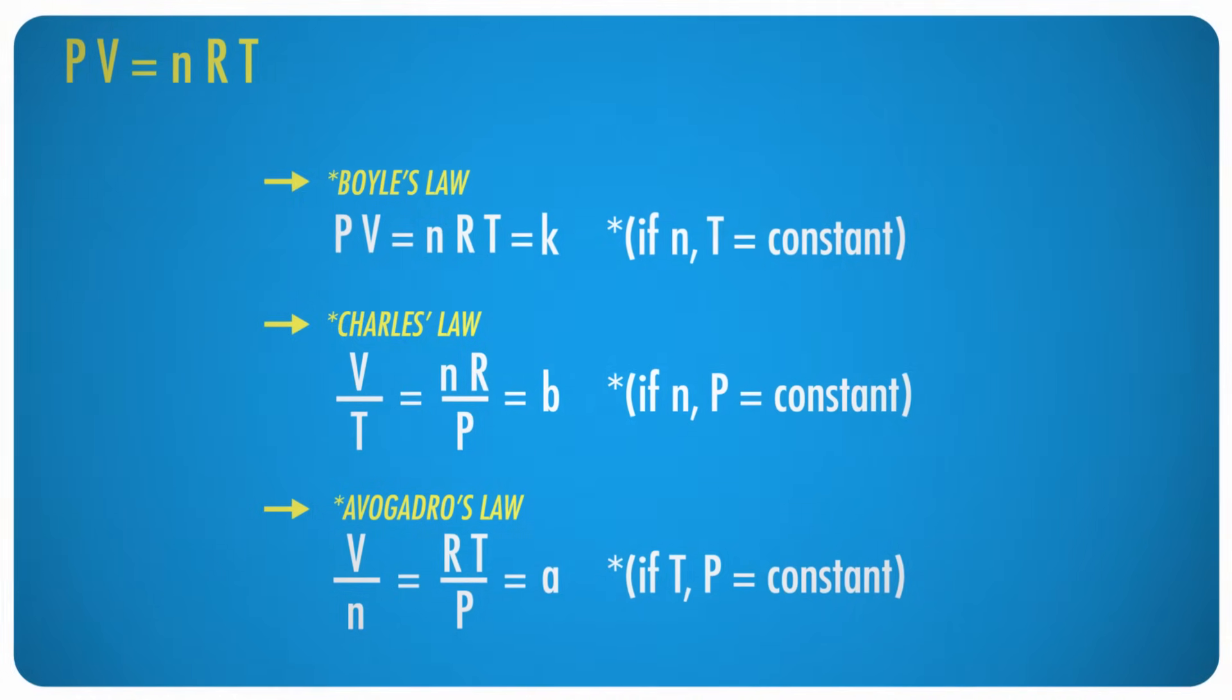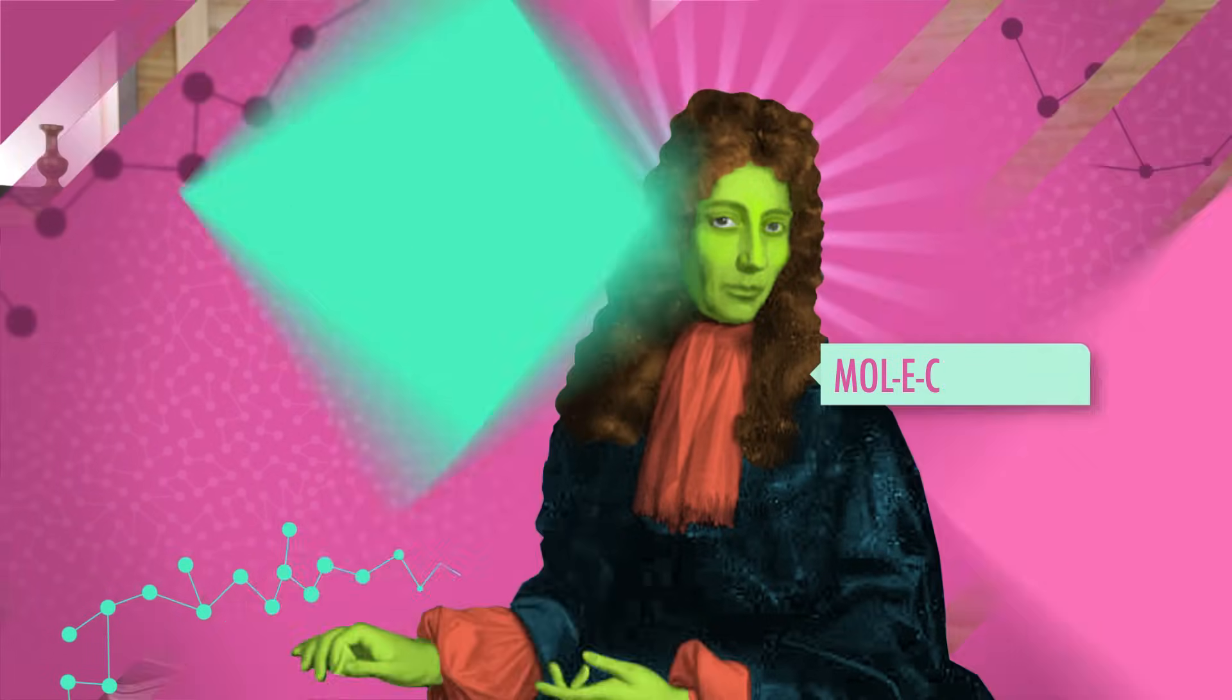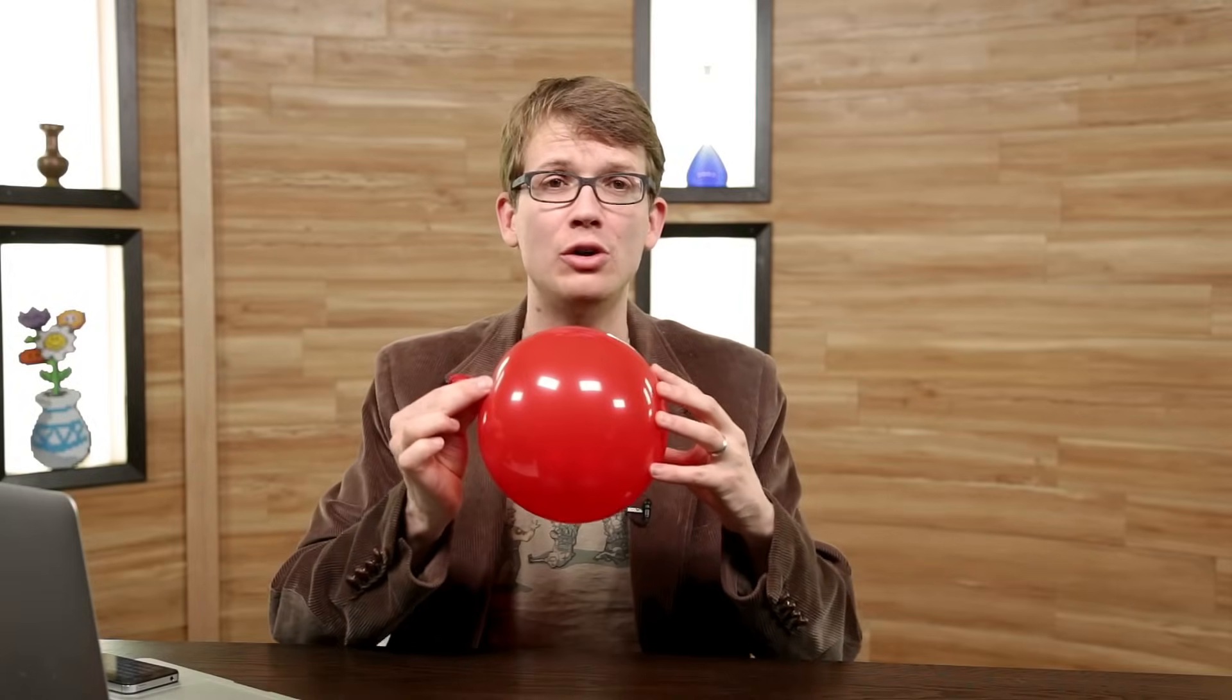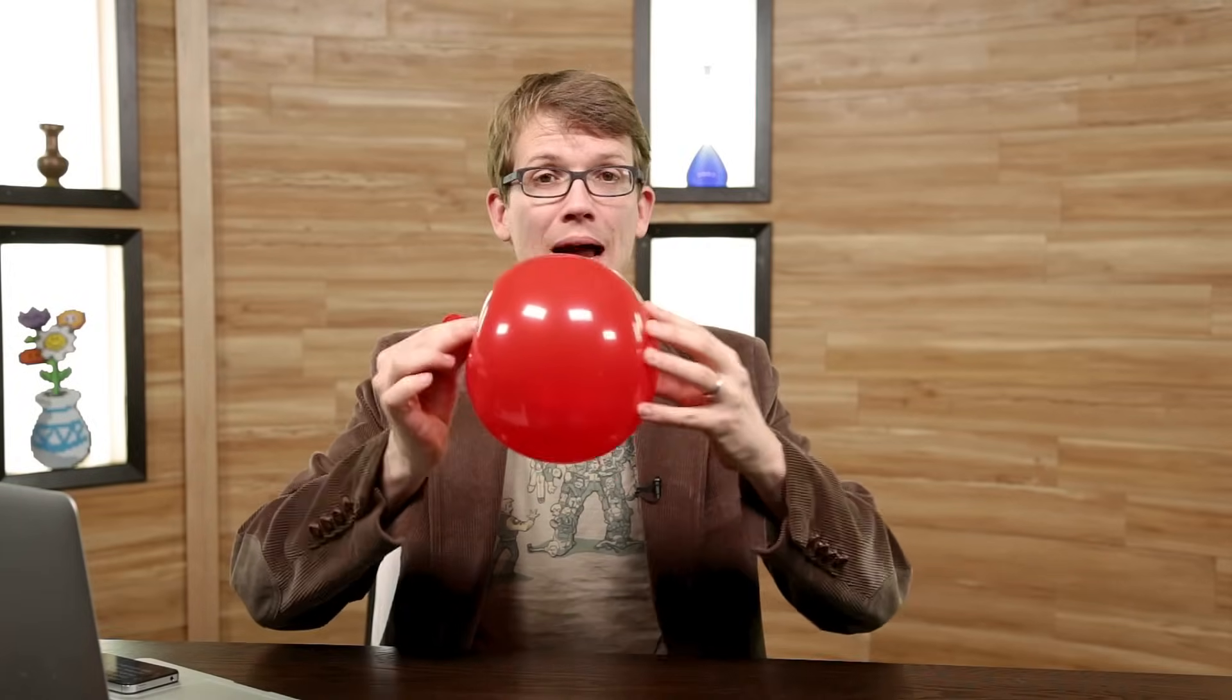You remember the ideal gas law, it's a combination of three related laws that were discovered by a variety of scientists. Let's review real quick. Boyle's law was first published by Robert Boyle in 1660, but it was actually discovered by two of his contemporaries, Richard Townley and Henry Power. It says that the product of the pressure and the volume of a gas is always constant as long as the temperature remains the same. Boyle's law requires a closed system where the amount of gas is constant, like in my balloon.